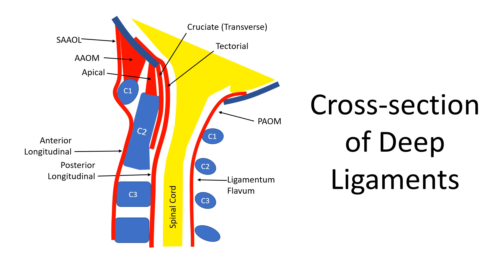This is a cross-section of the other deep ligaments. You can see the SAOL there, the AAOM, apical, and cruciate — which is that transverse and tectorial from the front. The alar ligaments are involved in reducing side-to-side or C1-C2 overhang. The transverse ligament is involved in controlling the position of the dens in flexion — it almost acts as a seat belt for the dens. So if you have a high Grabb-Oakes, the transverse ligament would be a focus. All of those other anterior ligaments — SAOL, AAOM, and apical — are to reduce the extension of the skull on the upper neck. So if there's an issue with the skull sliding backwards, especially as you look up, those are some of the ligaments that are critical in stabilizing that type of instability.